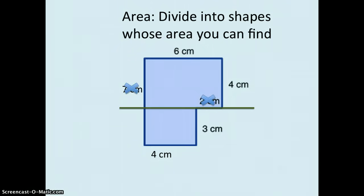Now I've crossed out the seven and the two because those measurements don't apply to the two rectangles that I've created. The top rectangle has a length of six and a width of four. The bottom rectangle has a length of four and a width of three.